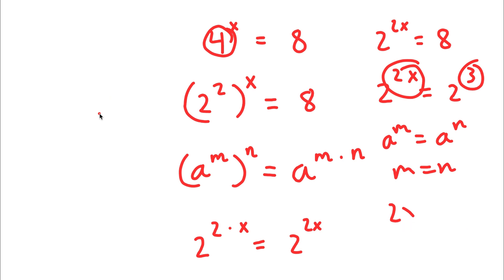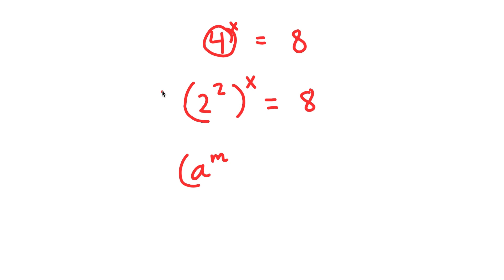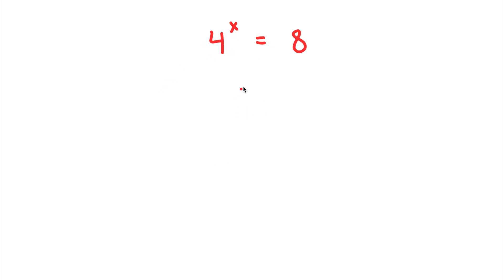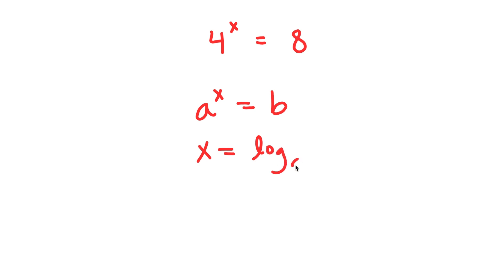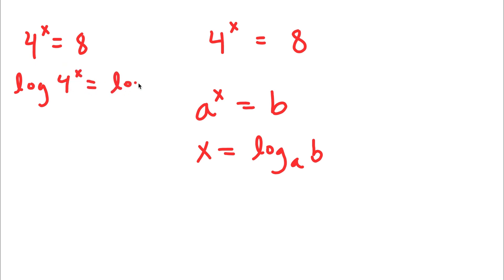Now, I have a second method of solving this problem. Again, I have 4 to the power of x equals 8. Using the rule that if a to the power of x equals b, then x equals log base a of b. Starting with 4 to the power of x is equal to 8, I can take the log on both sides. So I have log of 4 to the power of x is equal to log 8.